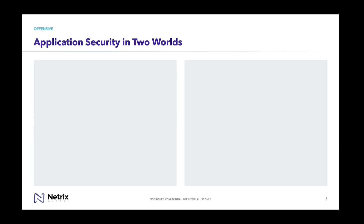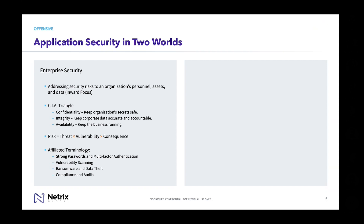Application security is split into two worlds, and I want to highlight the difference between them because that is going to come up in conversation. The first is that AppSec fits into what we would consider enterprise security. This is what we all deal with on a normal basis, where we're doing our best to defend the company, its assets, and personnel. When it comes to things like the CIA triangle — confidentiality, integrity, and availability — these principles must be protected within any corporate structure.